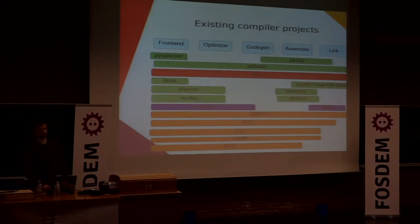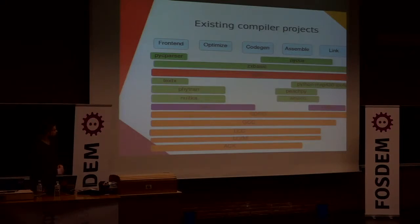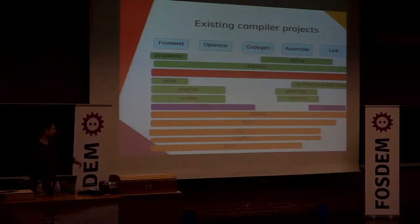Of course there exist a lot of compiler projects already. You have all the phases of compilation and here are some projects listed — it's not complete but gives you some overview. At the lower part you see the more conventional compilers, all written in C or C++. There are some compilers written in Rust. At the top I put some projects implemented in Python, and you can see that the PPCI project goes all the way from frontend to linking as well.